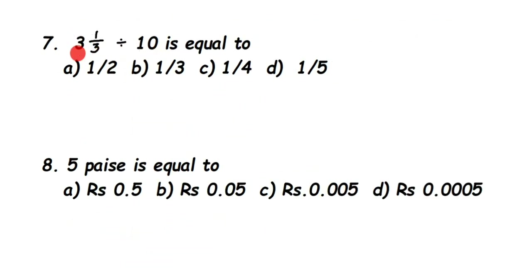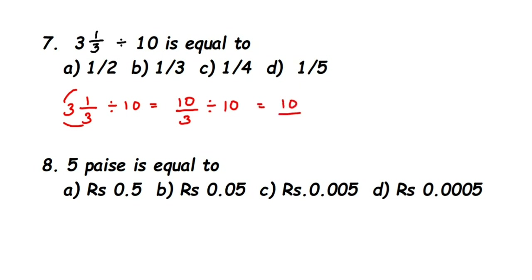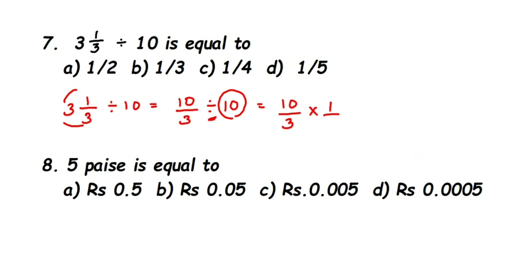Next: 3⅓ divided by 10. We have a mixed fraction divided by a whole number. First convert 3⅓ to improper: 3×3=9, plus 1 is 10, so 10/3. Now 10/3 ÷ 10 — use the same method: first fraction stays, division becomes multiplication, take the reciprocal of 10. Ten can be written as 10/1, so its reciprocal is 1/10. Cancel 10 and 10, leaving 1/3. That is option B.